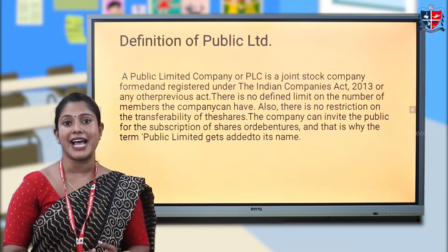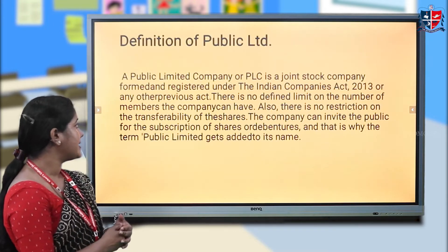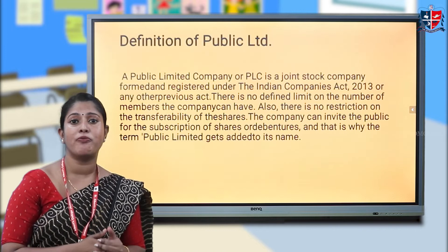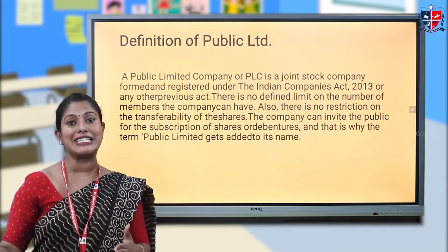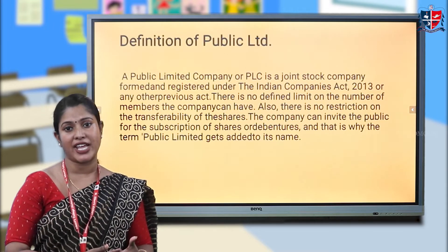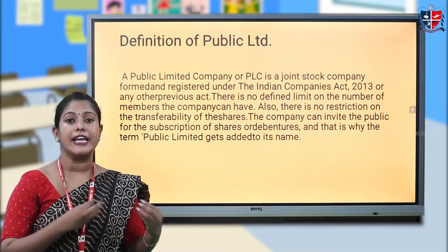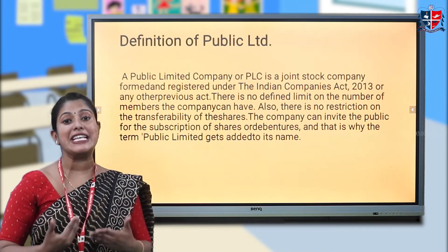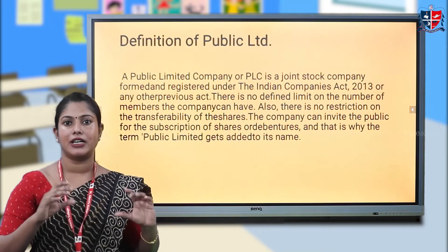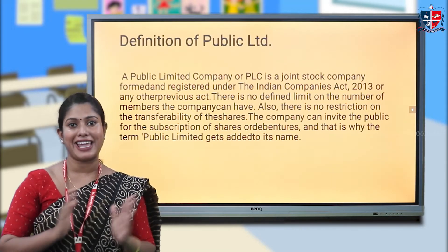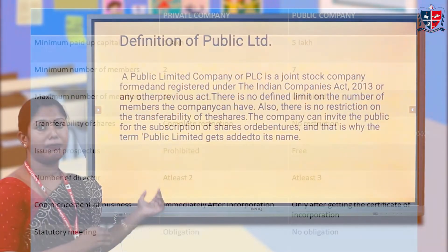A public limited company is formed and registered under the Companies Act or any existing Companies Act. In the case of number of members, the minimum is 7 and the maximum is unlimited. In the case of transferability of shares, it is easily transferable — shareholders can easily buy and sell their shares. The company can easily invite investment from the public through a prospectus. The name ends with 'Public Limited' — for example, ABC Public Limited Company.